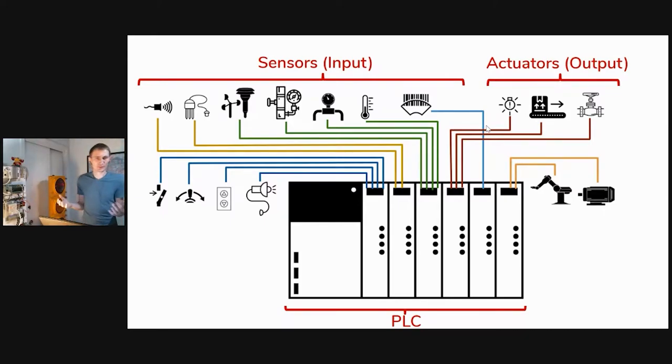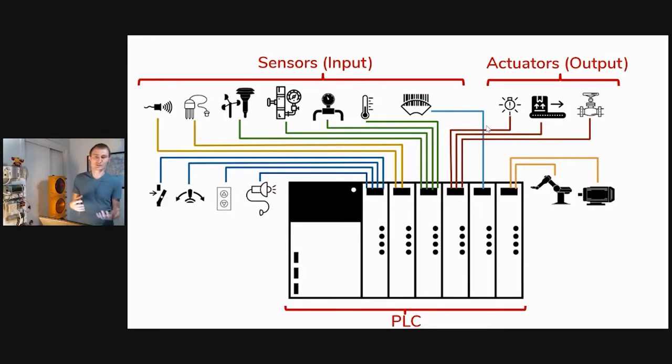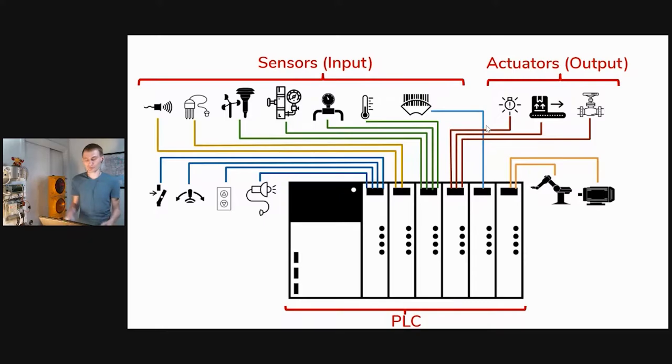A similar example is oil platforms, where the inputs are pressure sensors and flow sensors, and the outputs are the valves that control the flow of liquid.